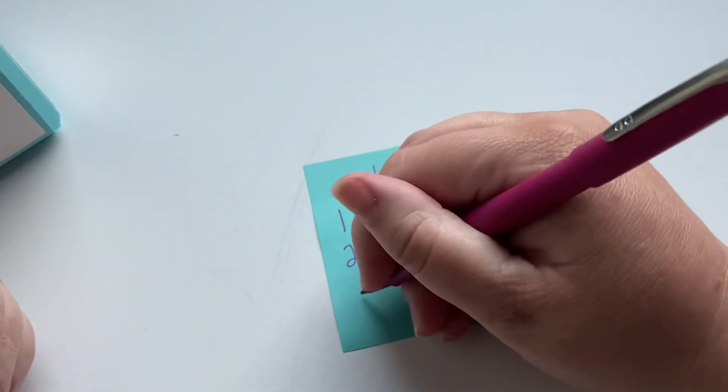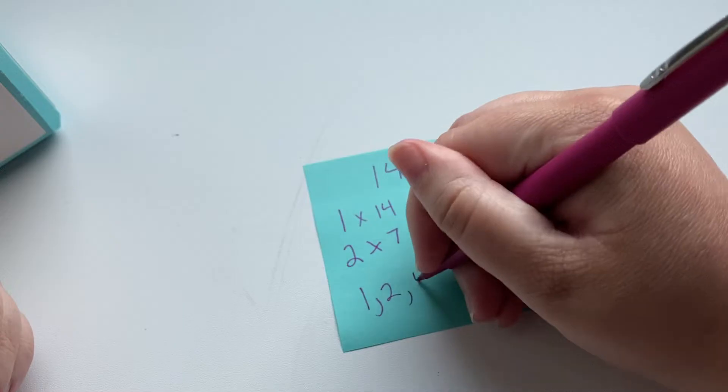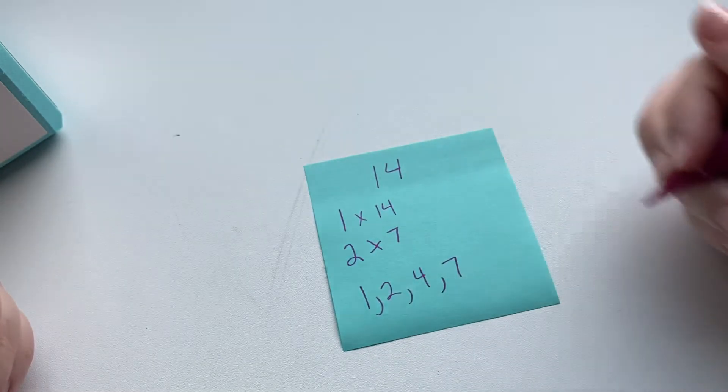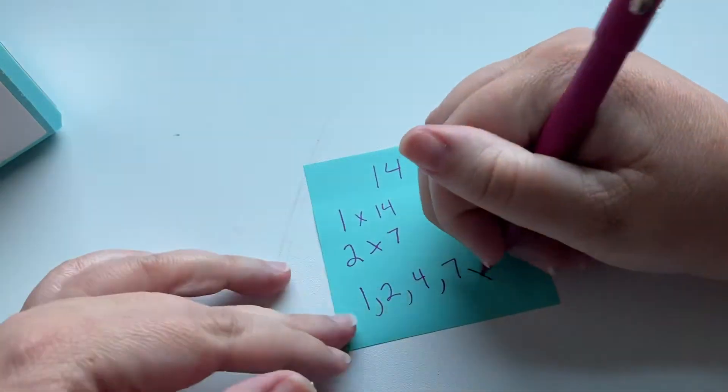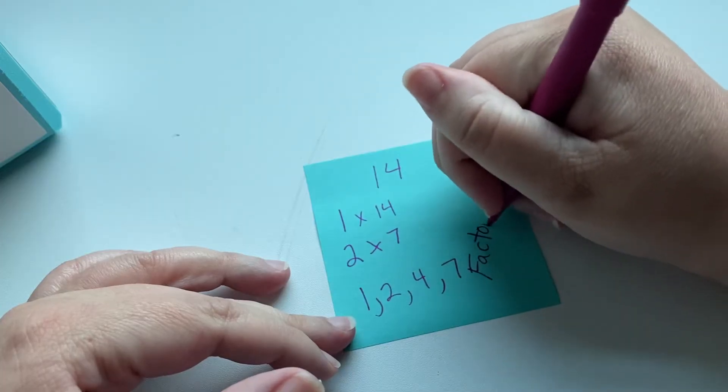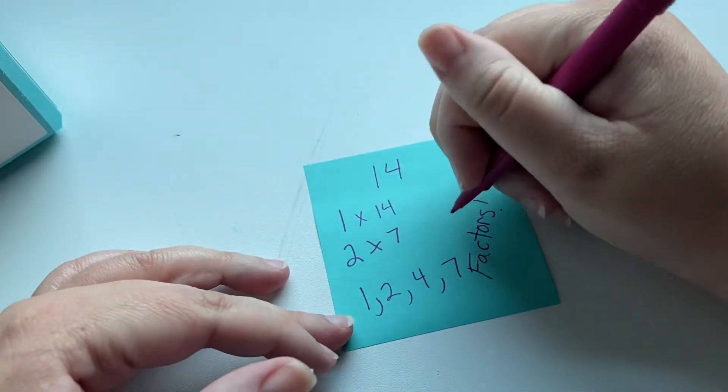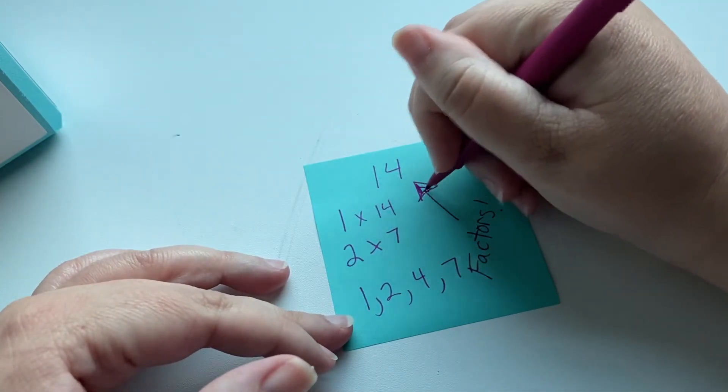So there you have it. These are all of the factors: 1, 2, 7, and 14. Those would be the factors for 14.